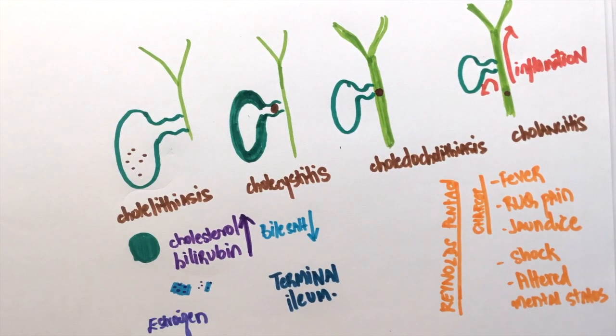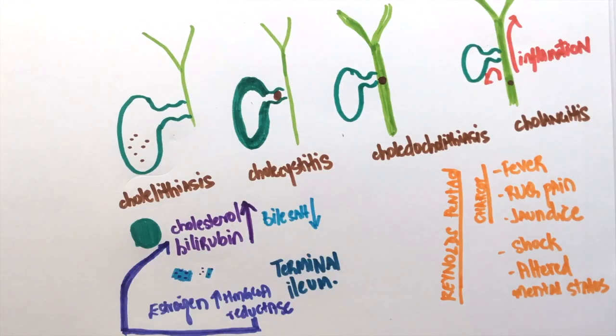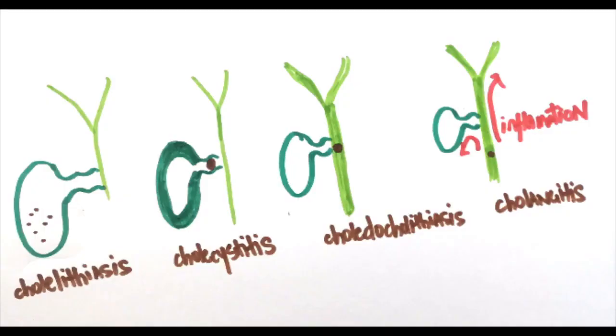Estrogen increases the risk of gallstone formation. This is because it stimulates HMG-CoA reductase. HMG-CoA reductase is involved in the synthesis of cholesterol. Gallbladder stasis does increase the risk of forming gallstones but estrogen isn't responsible for this. Instead, an increase in progesterone can increase the risk of gallstone formation by causing gallbladder stasis.